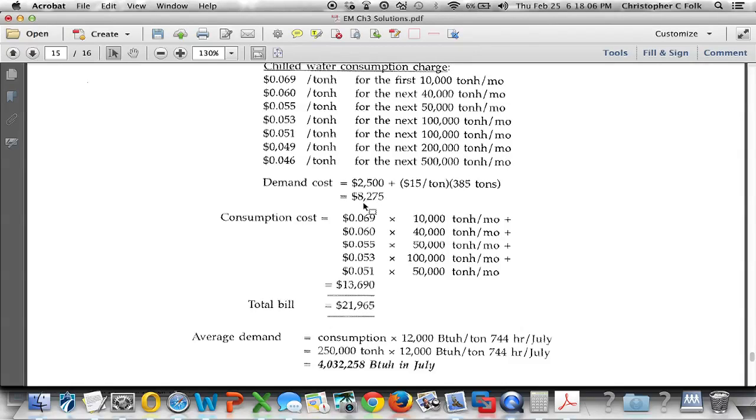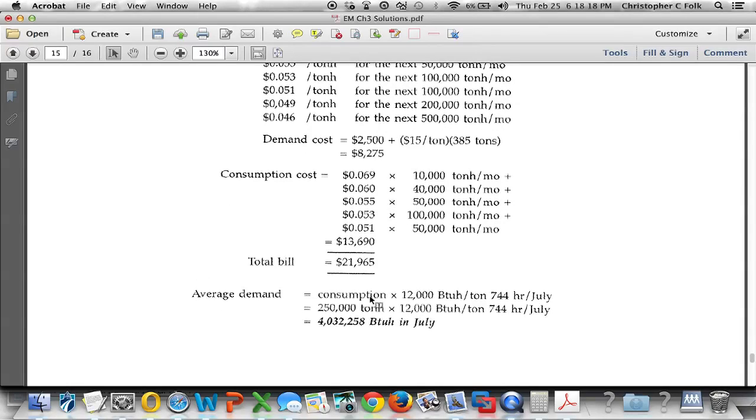So there's the demand cost of 8,275 plus the $13,690 for consumption, and there's the total bill. The average demand can be calculated by multiplying consumption times the number of BTU hours per ton divided by the number of hours in a month in the month of July. And that's how this calculates out.